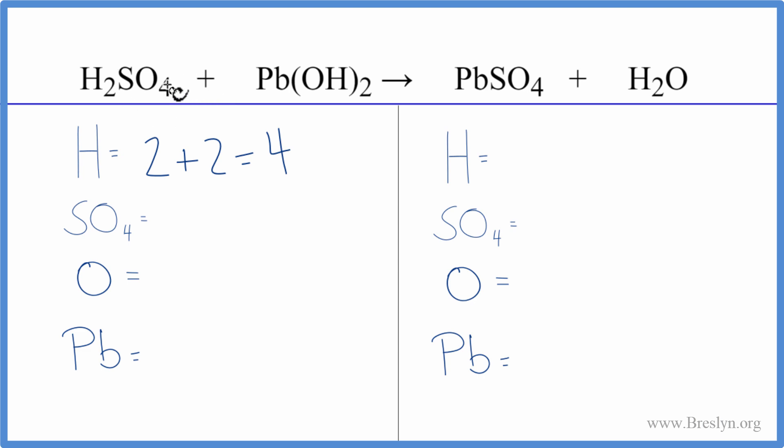And then this SO4, it's called a sulfate group. It's a polyatomic ion. We have it here and we have it here. It stays together in the reaction. So we're going to count this as one thing. We're going to say we have one sulfate ion, one SO4.